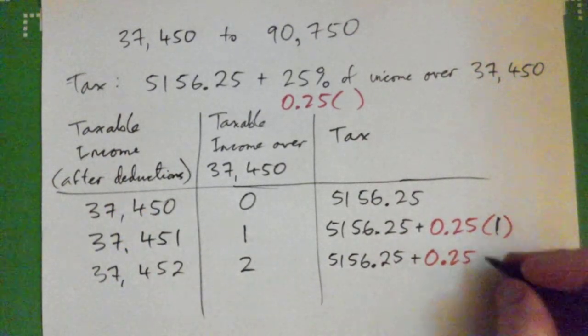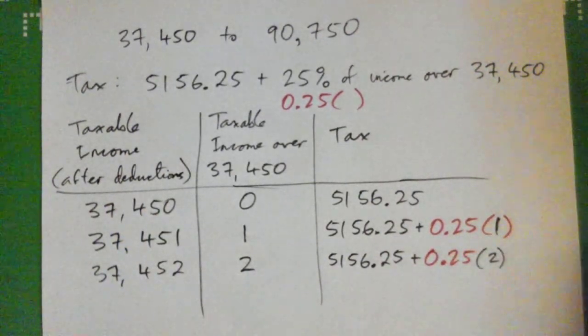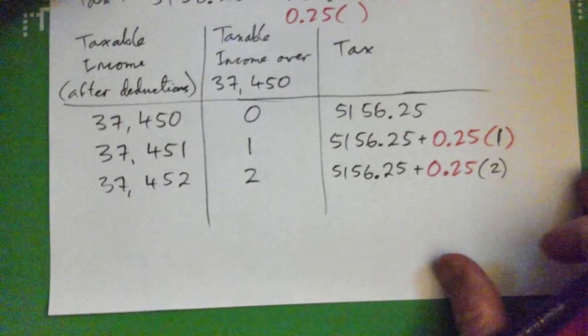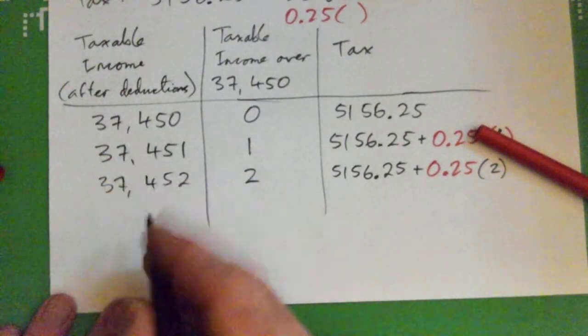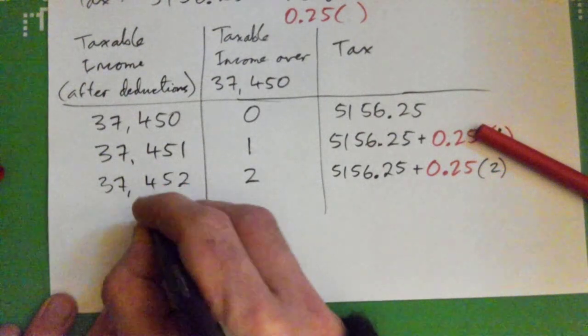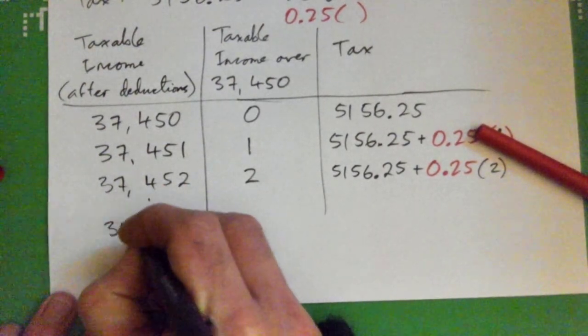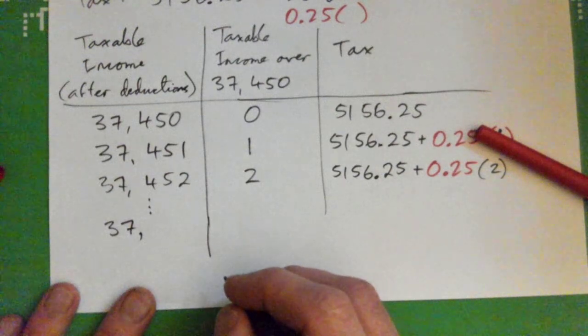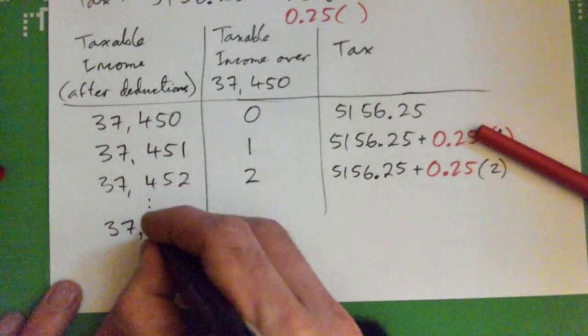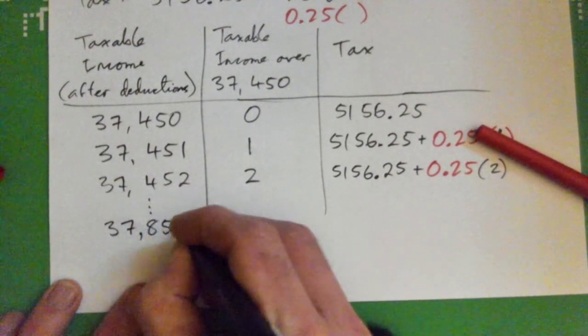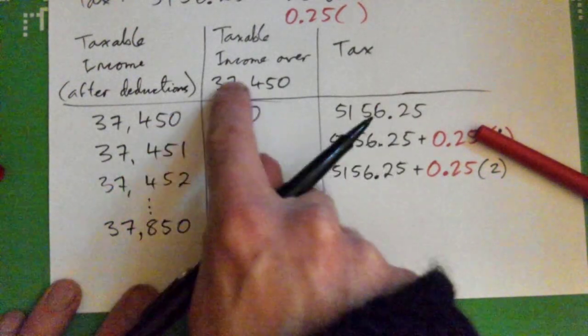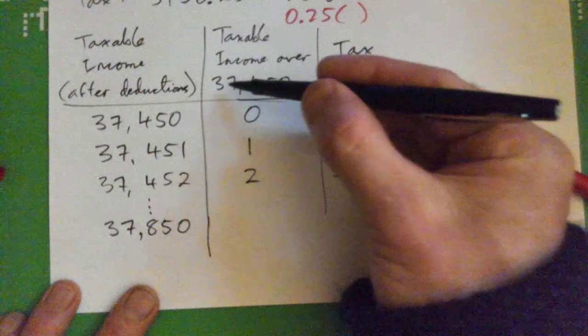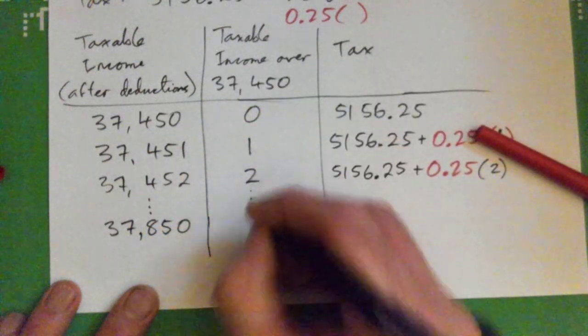If this is your taxable income, that's two dollars over, so you pay this amount always plus 25% of whatever is over that, right? Two dollars, and so on. Let's say our income was $37,850, just for fun. How many dollars over is the taxable income over $37,450?